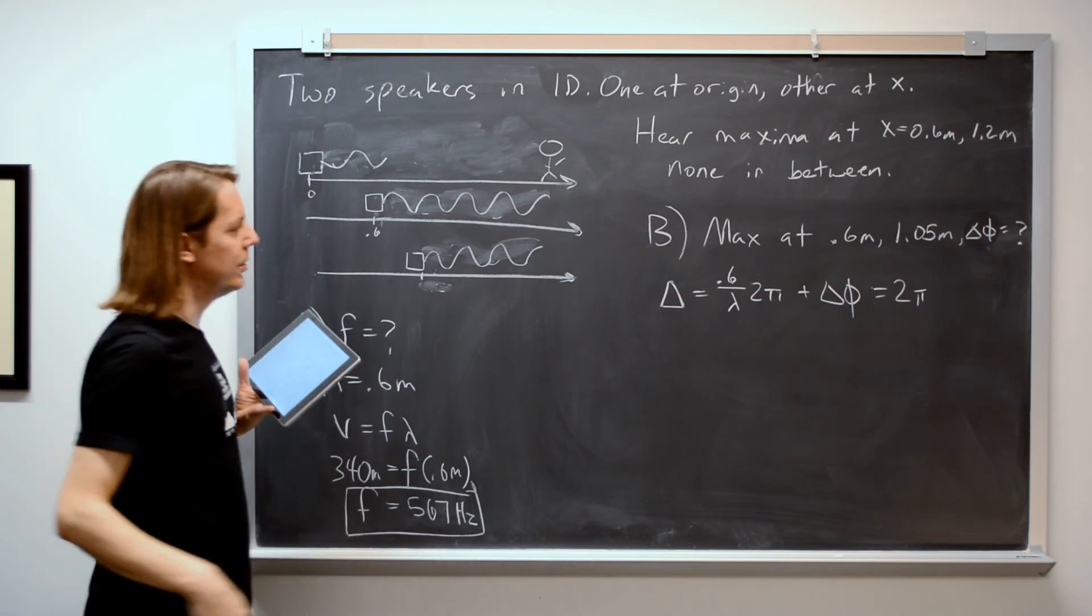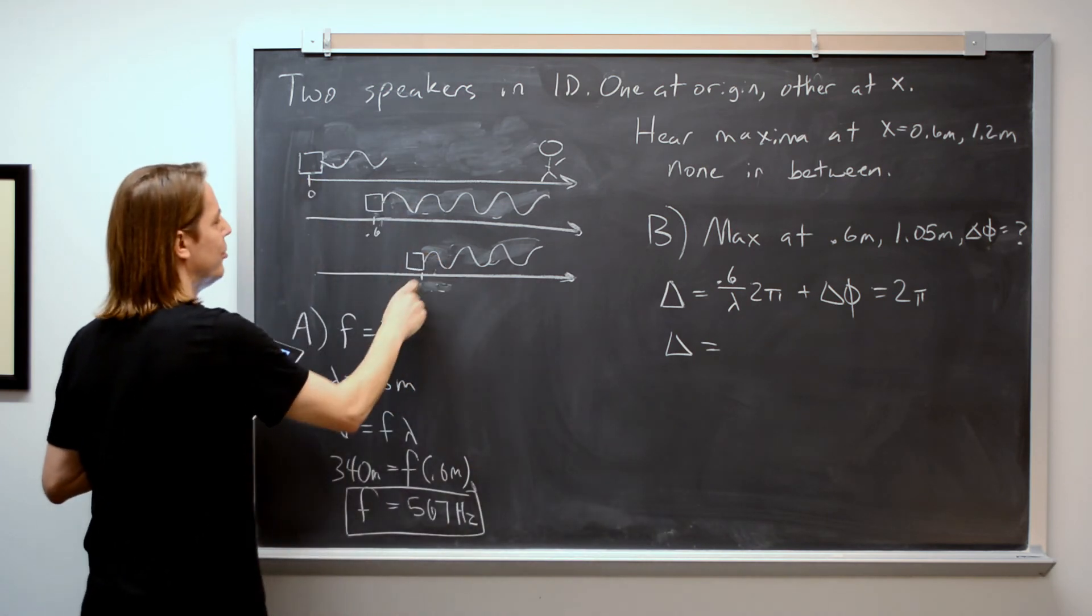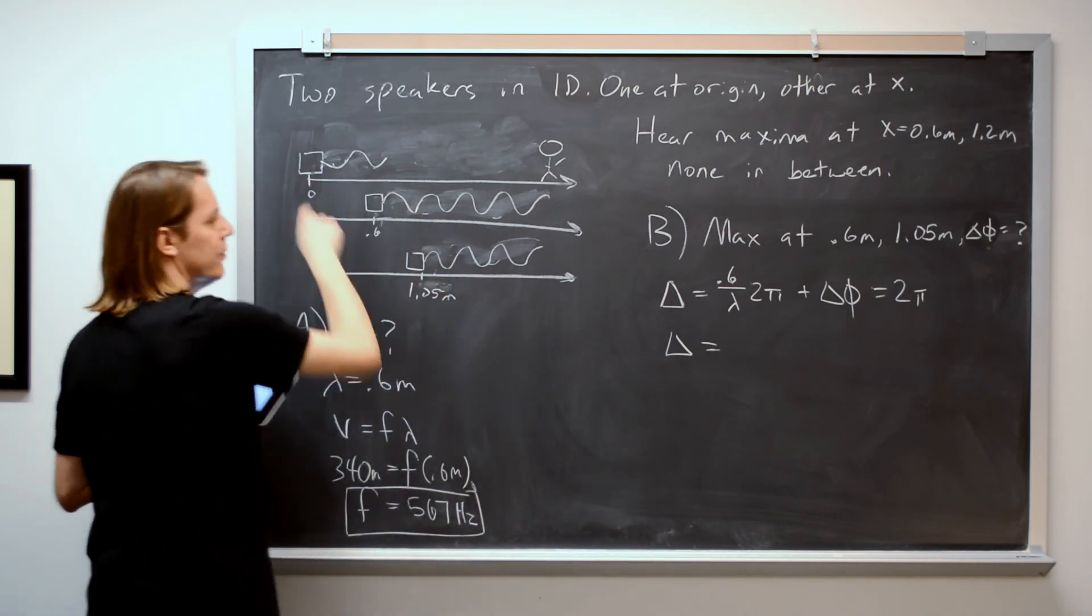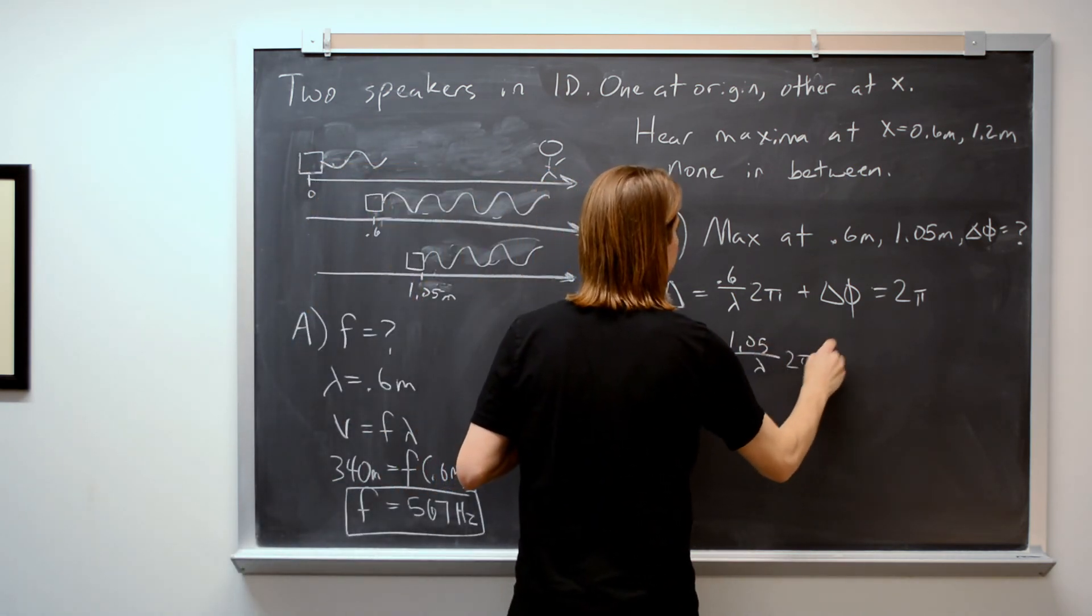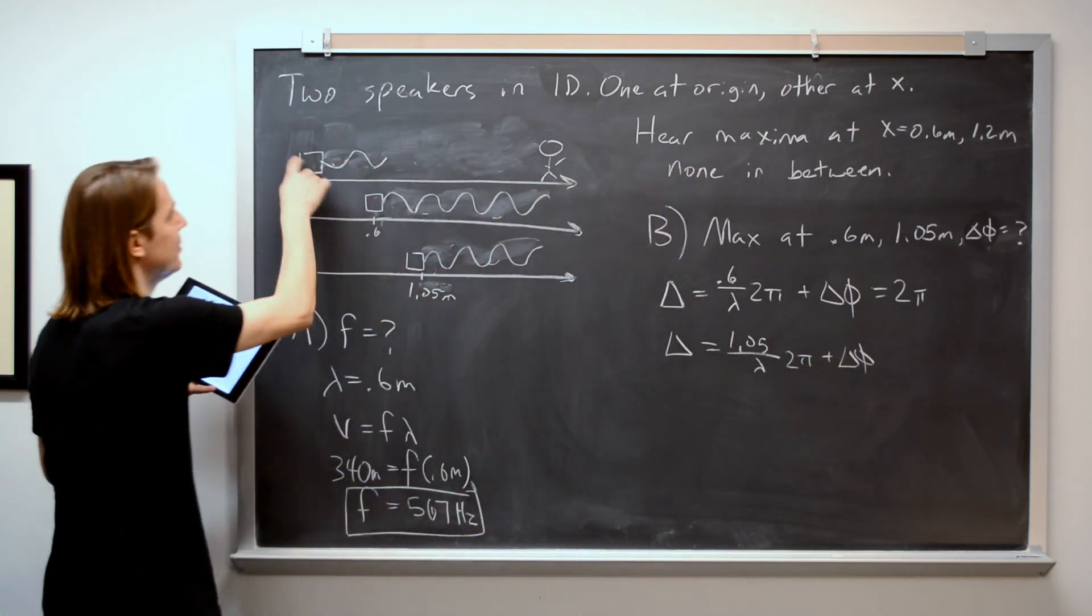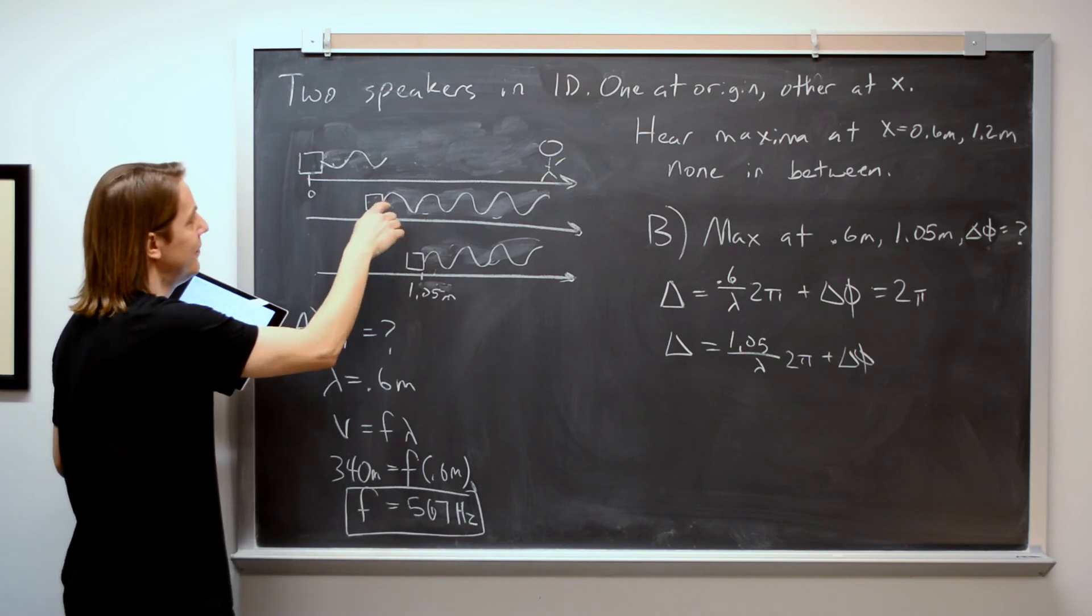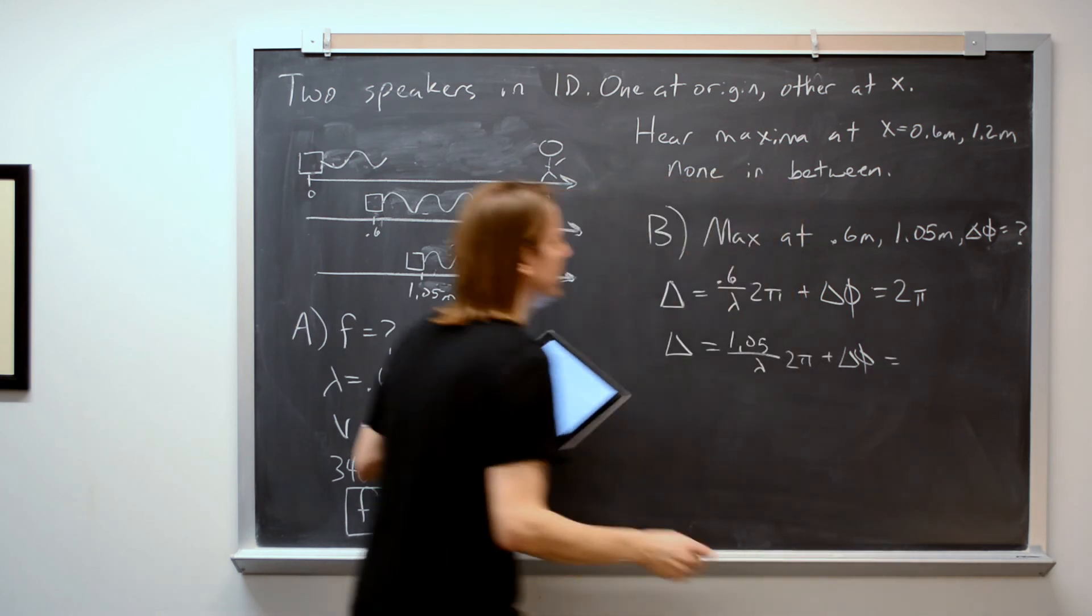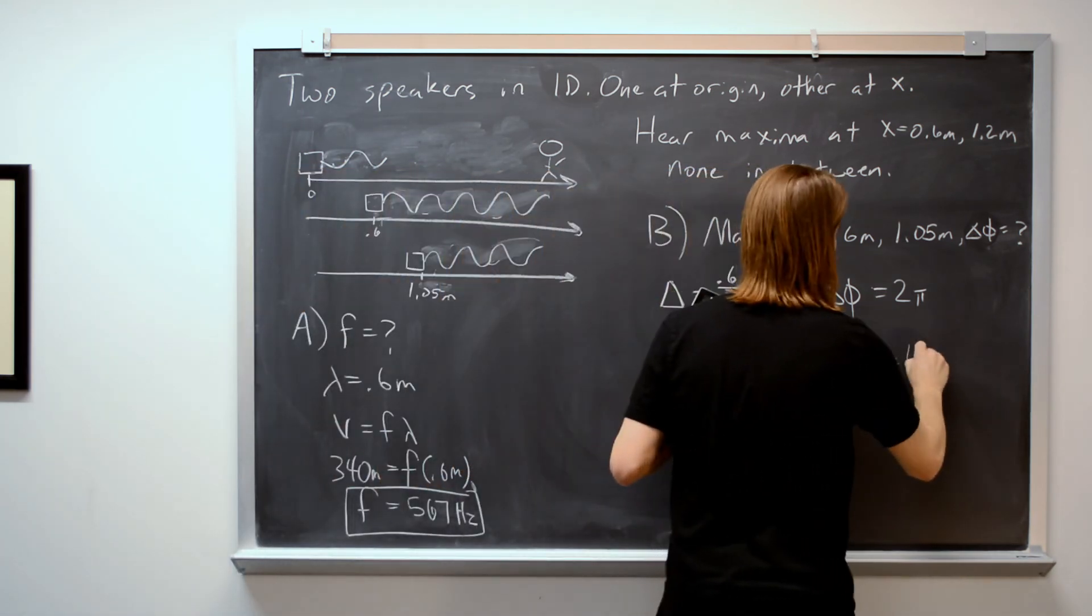That would be sort of one wave out of phase, or one cycle out of phase. But another one we could do for this one. When it's at 1.05 and you're interfering with one from 0, then that's 1.05 over λ times 2π plus the same phase constant. Because remember, this is the same speaker. We're just sliding it back and forth. So the phase constant between this speaker and this speaker, it's the same. We'll call it Δφ. And this is the case where we're now two cycles out of phase. So it equals 4π.